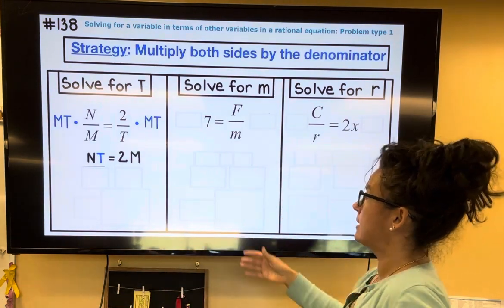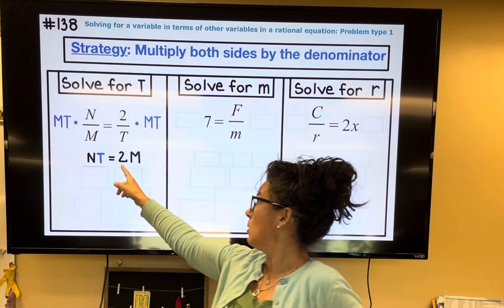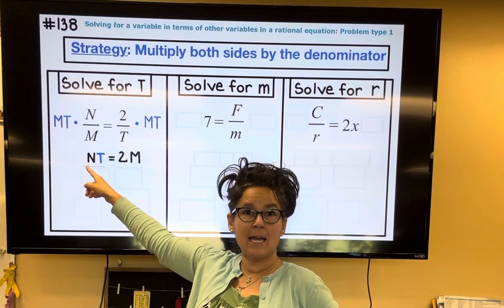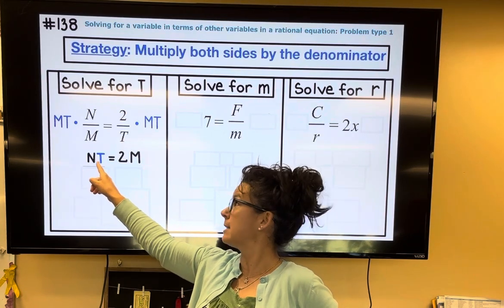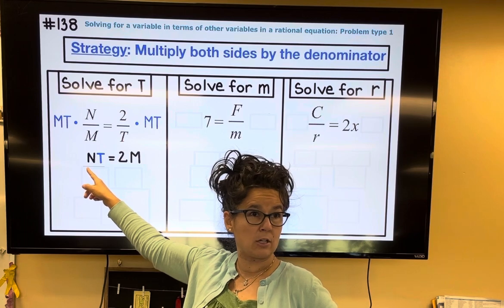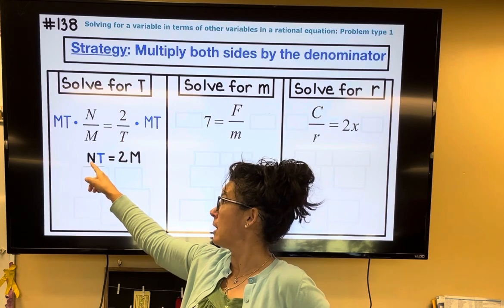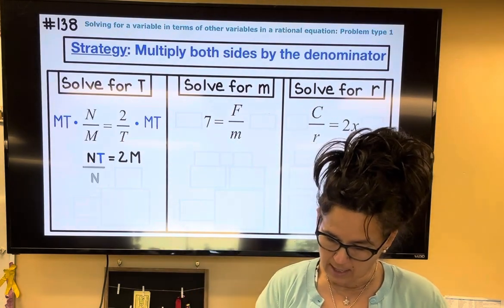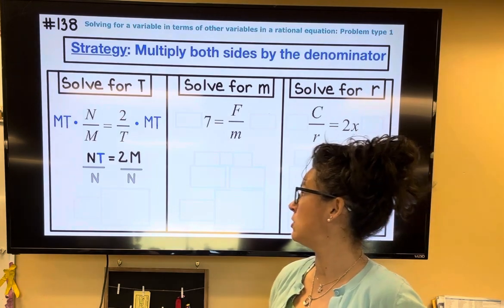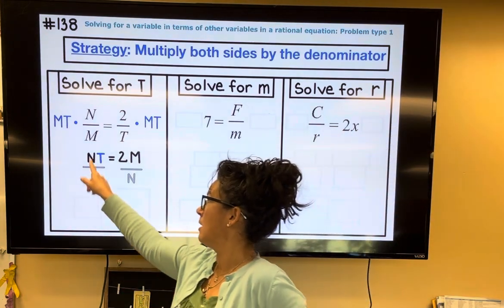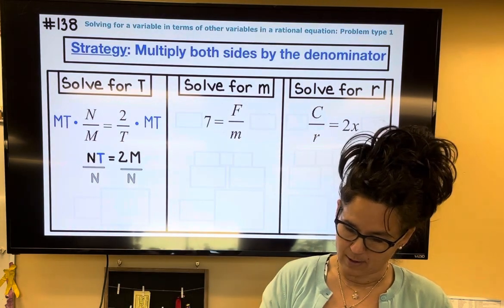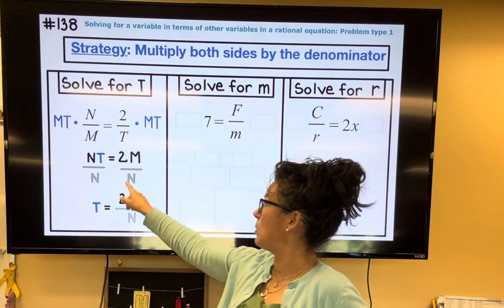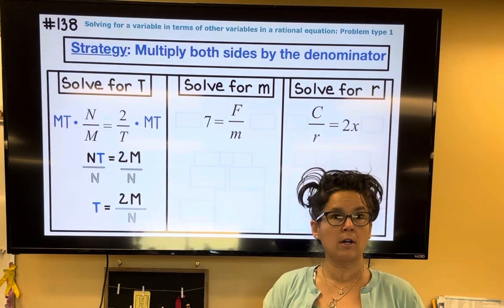Now I'm going to relook at it — solve for t. What's preventing t from being alone is the n, and it's right next to it, so that's multiplication. So I'm going to get rid of multiplying by n by dividing by n. What I do to one side, I do to the other. The n's are gone, t is by itself, and so t equals 2m over n.